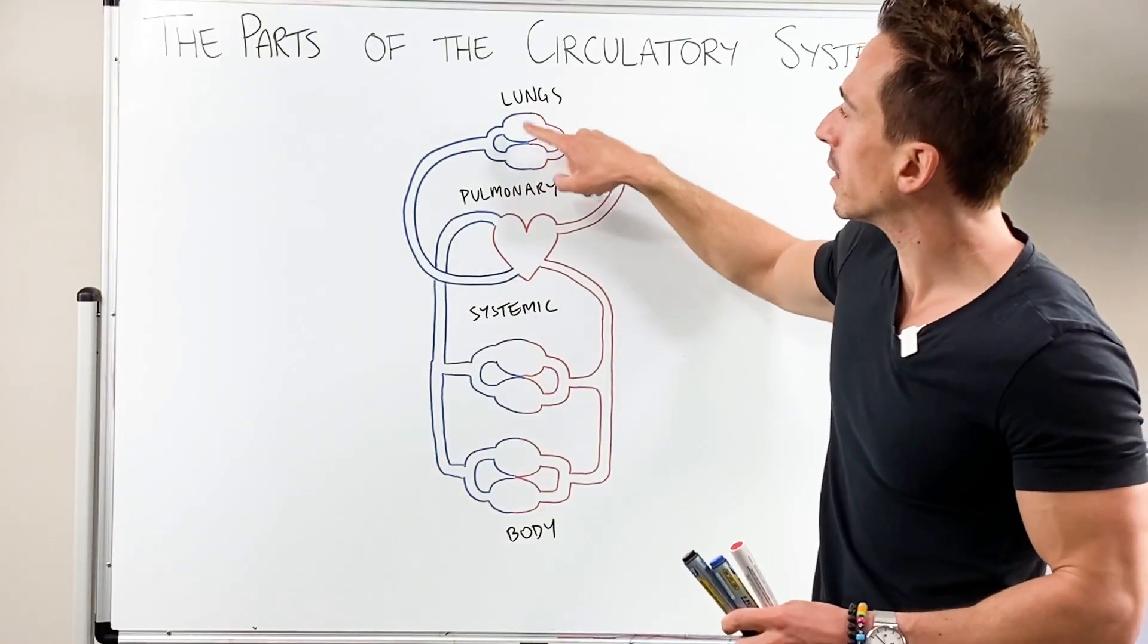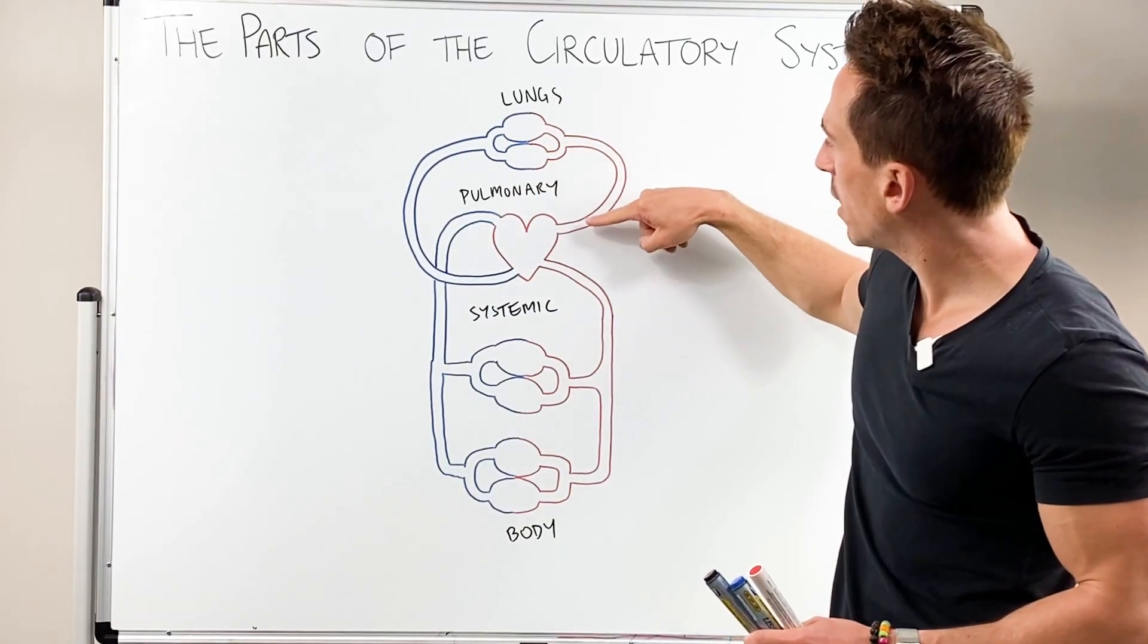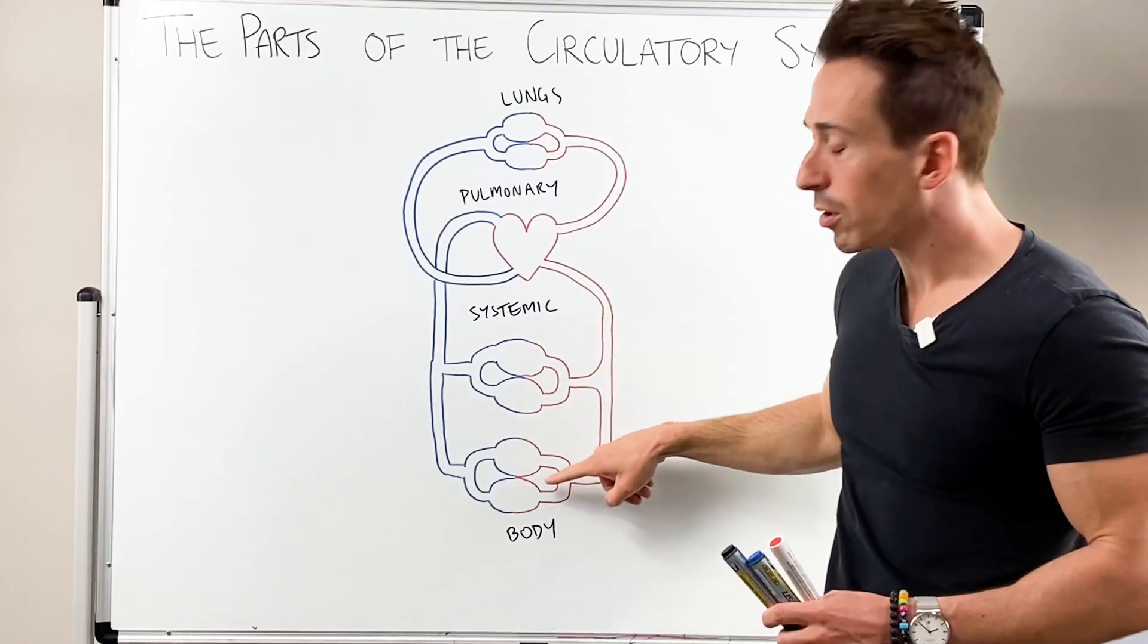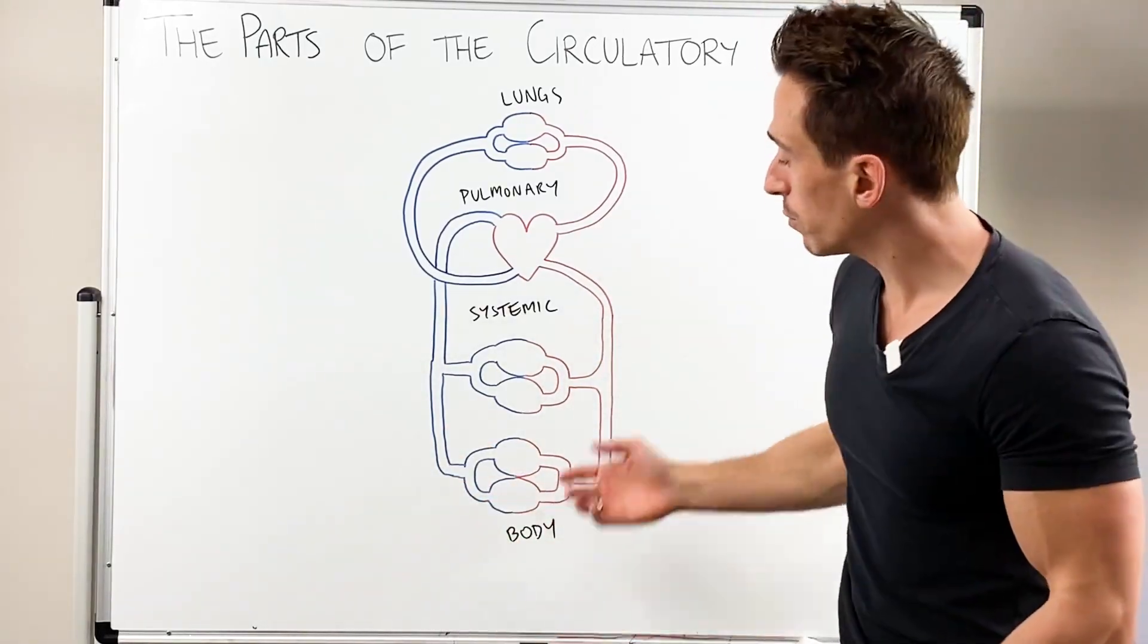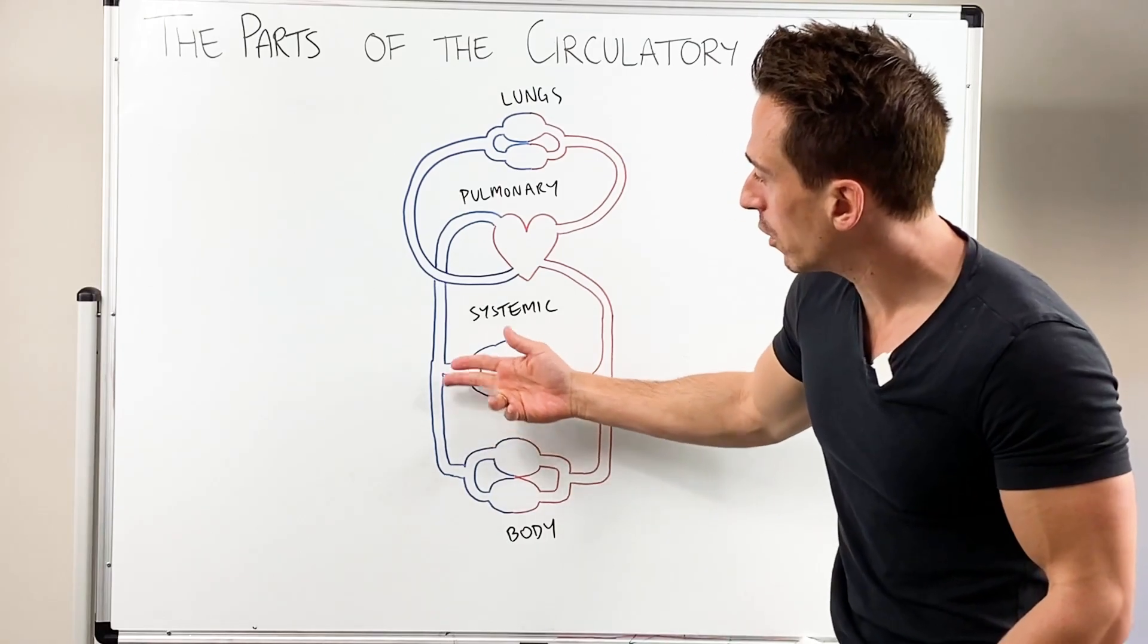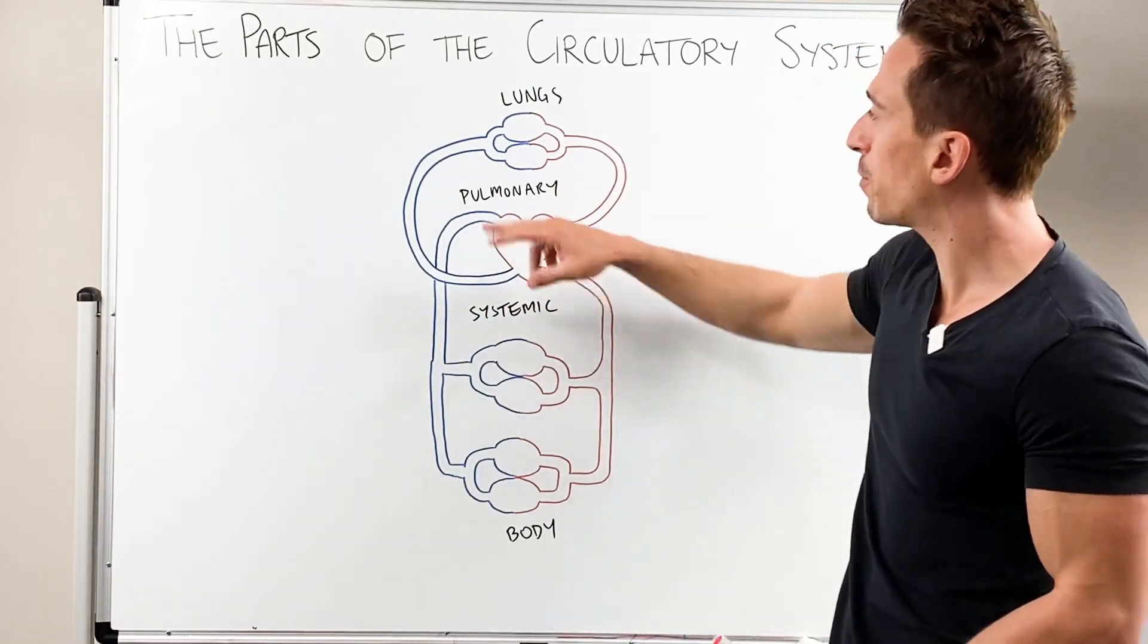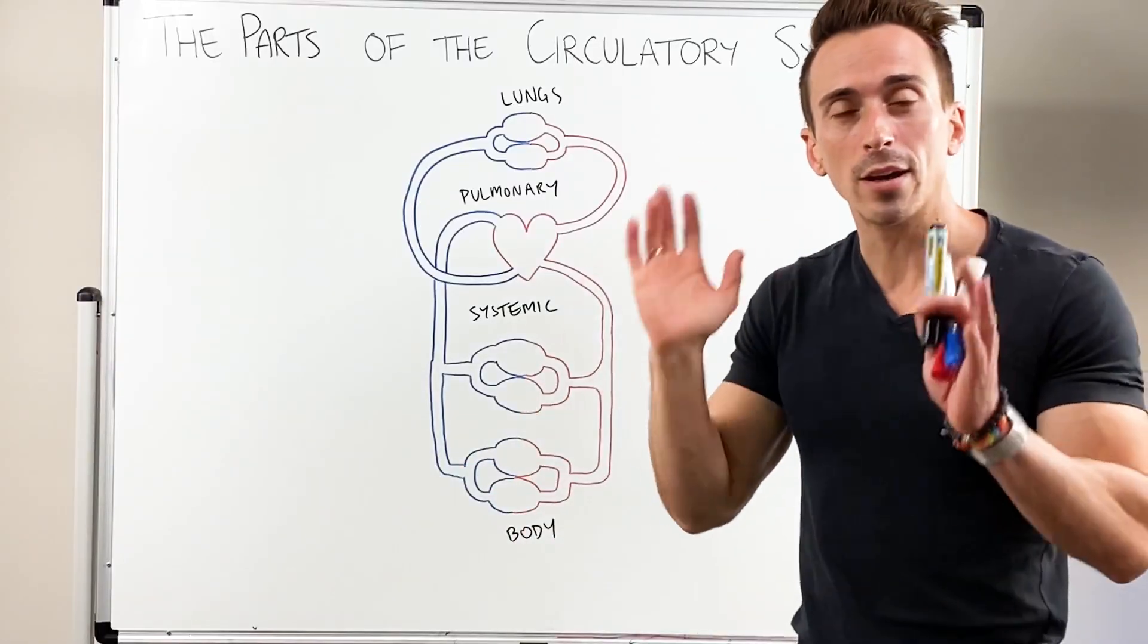Once the lungs deliver that oxygen to it, it's now red and oxygenated and that can then get delivered to the rest of the body. That oxygen releases out of the bloodstream, goes to the tissues and then we've got deoxygenated blood again. So we go from the pulmonary circulation, systemic, pulmonary, systemic, pulmonary.